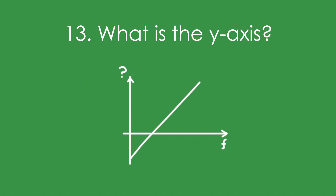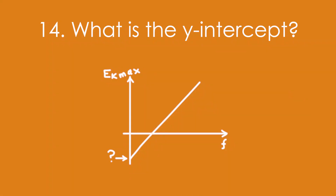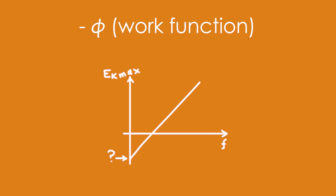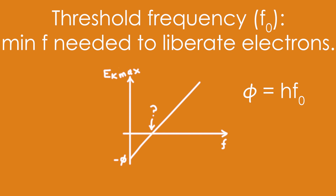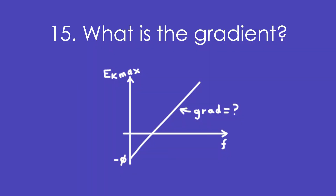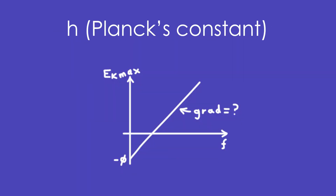Thirteen, what is the y-axis? It's Ek max. Fourteen, what is the y-intercept? It's the work function, phi — or rather minus phi. Fourteen, what is the x-intercept and how does it relate to the work function? It's the threshold frequency, f0. It's the minimum frequency needed to liberate electrons. Fifteen, what is the gradient equal to? It's Planck's constant.